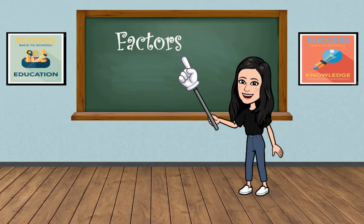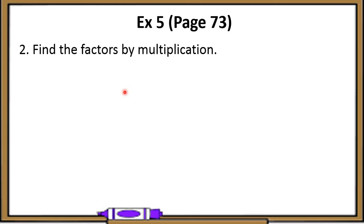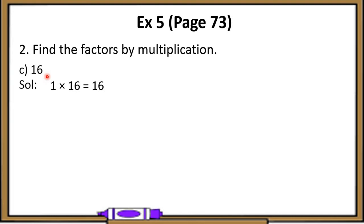Let's revise this concept by solving part C of question 2 of exercise 5. We know that 1 is a factor of every number and every number is a factor of itself. So the first multiplication fact is 1 multiplied by 16 equals 16, which means 1 and 16 are factors of 16.